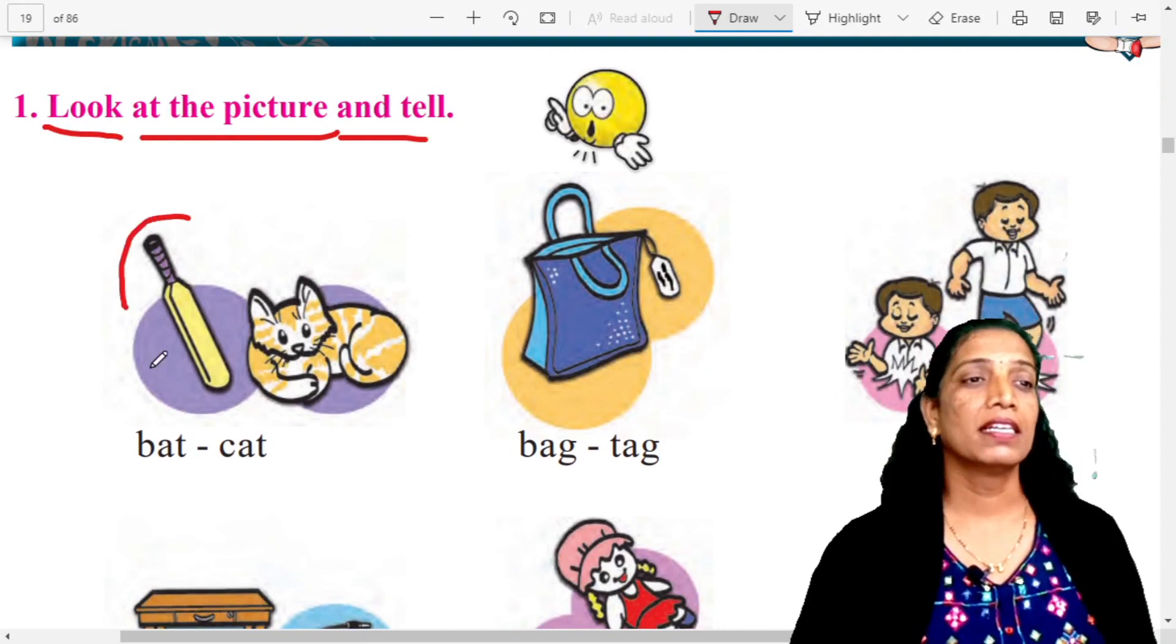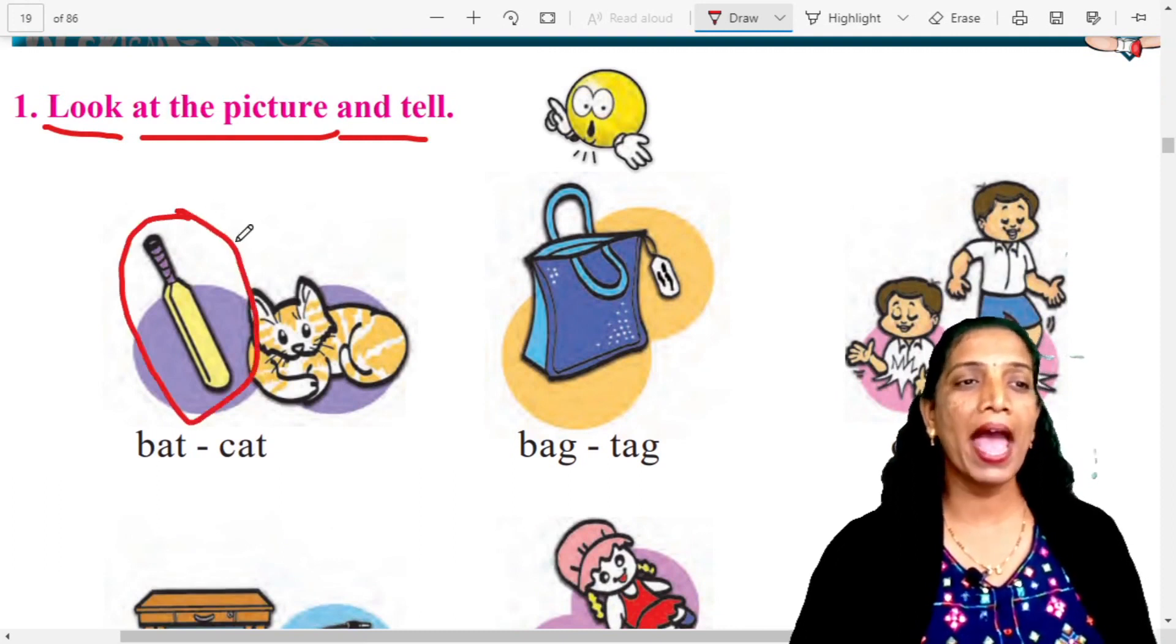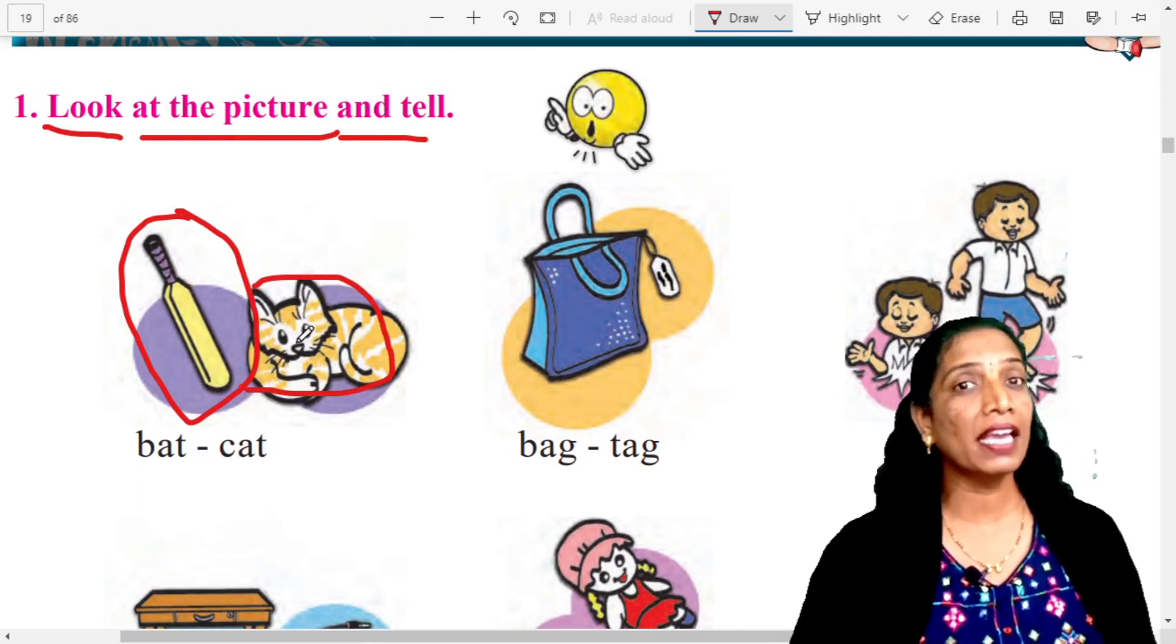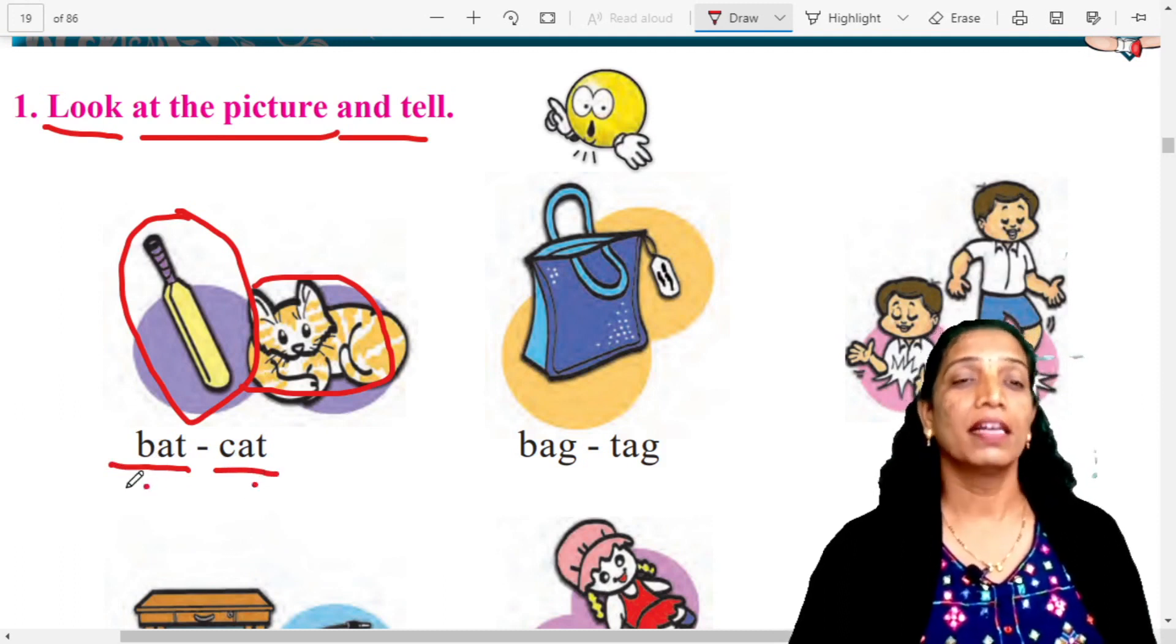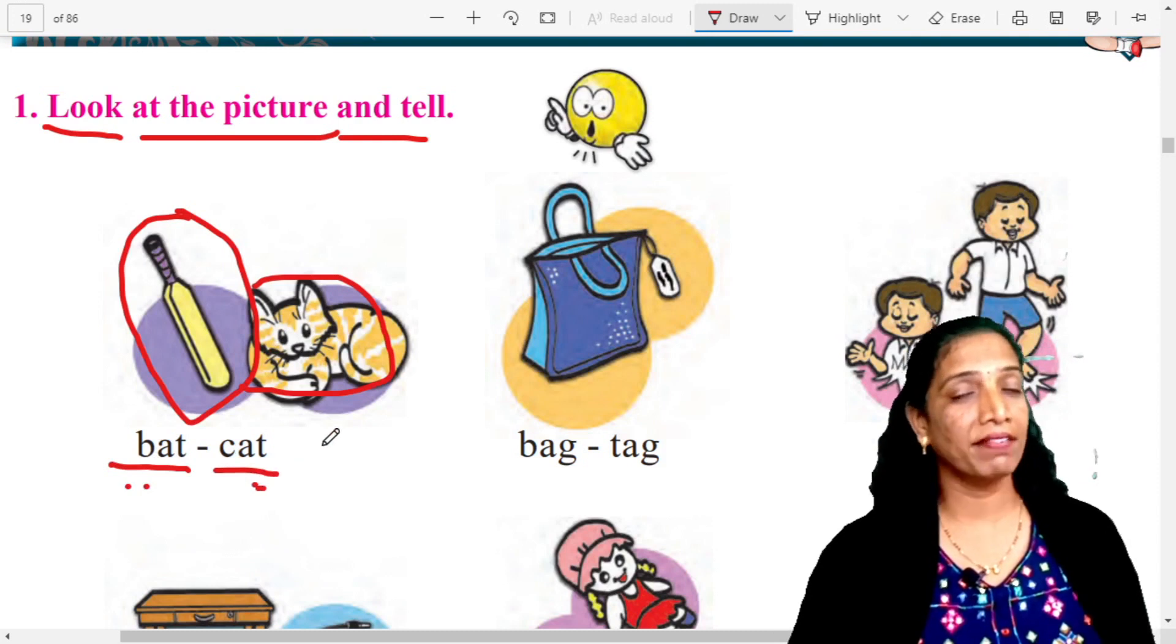What is this? This is bat. What is this? This is cat. B-A-T, bat. C-A-T, cat. Bat, cat. Bat, cat. Very good. Bat, cat. Rhyming words.